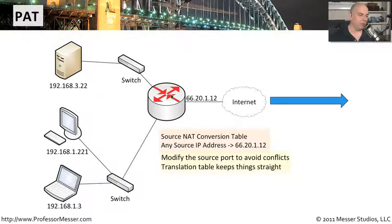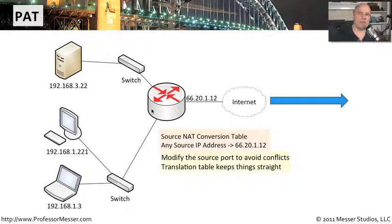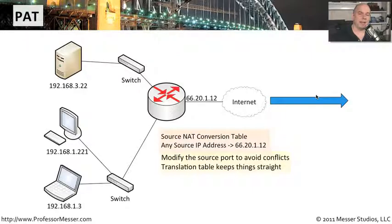The router keeps a translation table inside. The reason it's called a port address translation is because you must also change the port numbers being sent from these source addresses — otherwise you may have conflicts, since every one of these devices is going out a single IP address. The translation table is created inside the router or firewall performing the NAT. It knows that 192.168.3.22 is communicating out, and it keeps track of the translation between its original IP address and port number and the new IP address and port number used for that source.